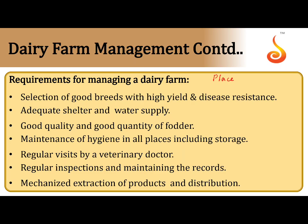If you are keeping the cattle for milk purpose, in such a scenario we need to find cattle which produces a high quantity of milk and also good quality of milk. We might not find all these qualities in one animal, so we might require hybridization — we might want to hybridize two animals.